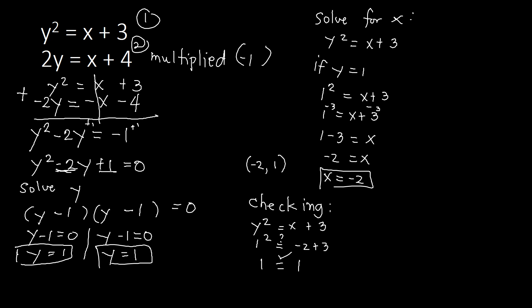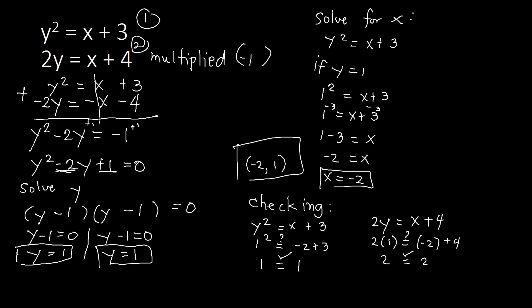Let's check the second equation: 2y equal to x plus 4. Substituting y equals 1 and x equals negative 2: 2 times 1 equals negative 2 plus 4, so 2 equals 2. That is correct. Our solution for this system of nonlinear equations is the point (negative 2, 1).